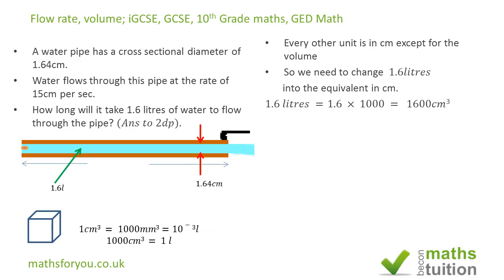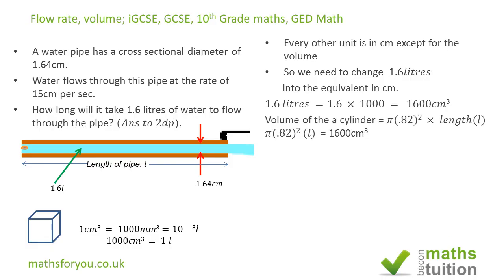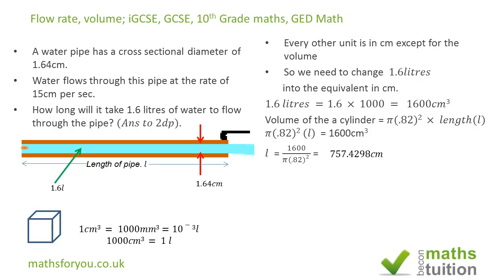Now we can find the length of the pipe. The volume of a cylinder is πr²l. In this case, that is π × 0.82² × length = 1600 cm³. Solving for length: L = 1600 ÷ π ÷ 0.82², which gives a length of 757.4298 centimeters.